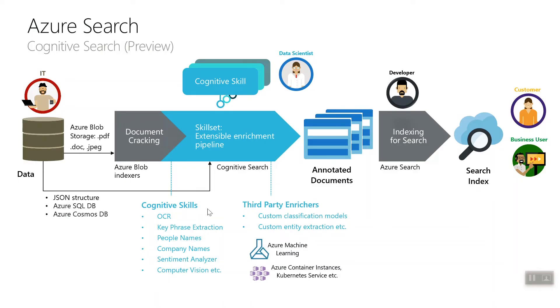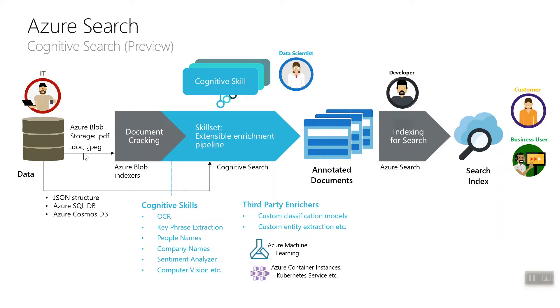Azure Search allows you to analyze data from different data sources, like SQL Database, Cosmos DB, and Azure Blob Storage. For some file formats, it also allows you to acquire additional attributes from files like PDF files, doc files, and JPEG files. Basically, it allows you to index data from these data sources, and then you'll be able to apply search capabilities on top of it so that it's searchable from your application.